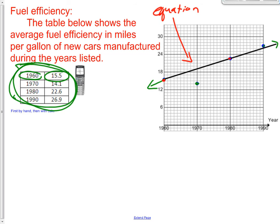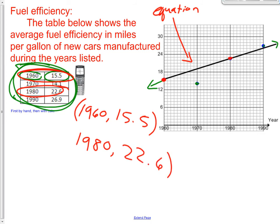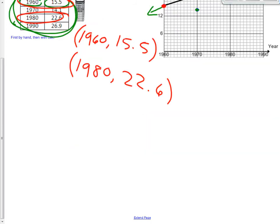Let's find the slope. Well, I know my two points. One is right here, which is this point, 1960 and 15.5. My second point, then, is this one right here, which is the 1980 and the 22.6.